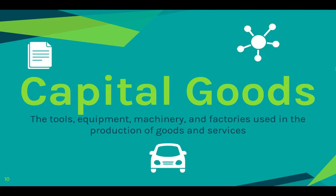Capital goods is the third factor. Capital goods are the tools, equipment, machinery, and factories used in the production of goods and services. Anything that's not a natural resource, that is created by people and used in the creation of more goods and services, is a capital good. For example, if you're an Uber driver, your car is a capital good. If you have a factory, the machinery and the factory building itself are capital goods. Any types of equipment or tools used are essentially capital goods — capital meaning they are worth some amount of money as well.